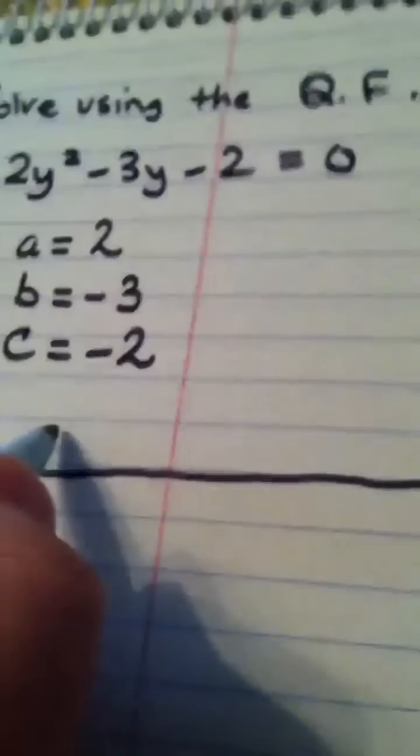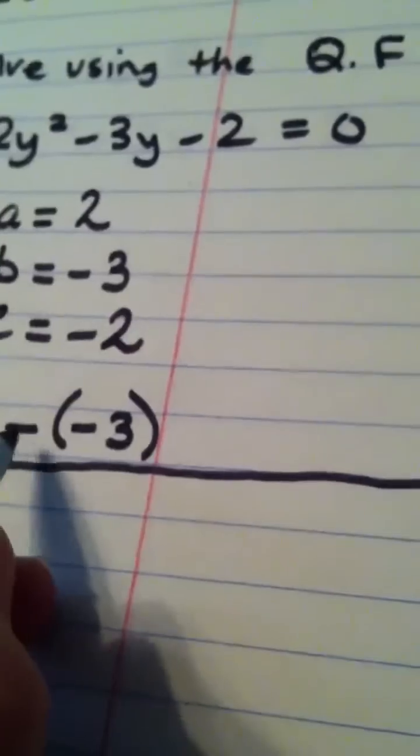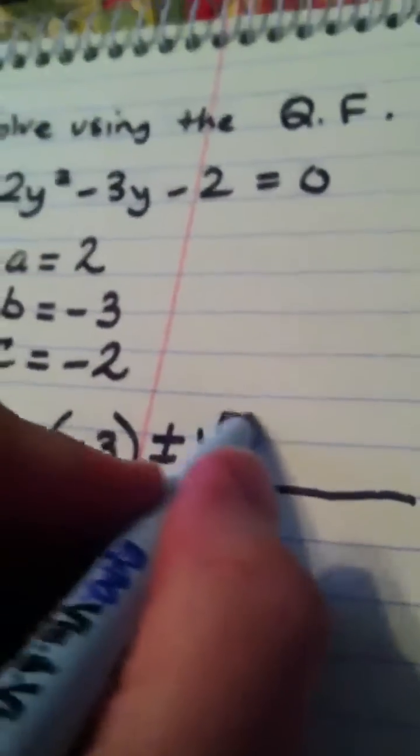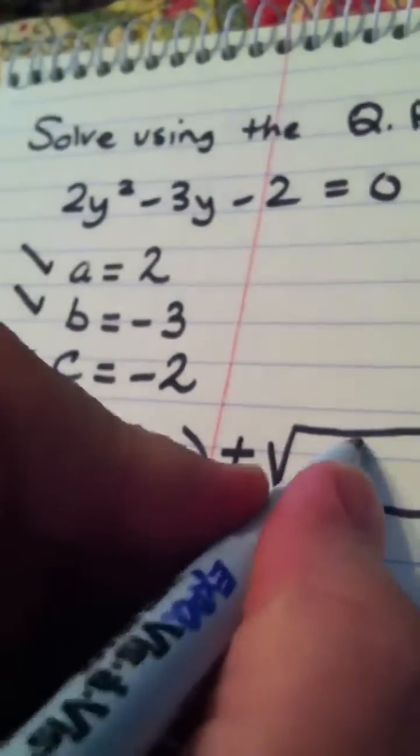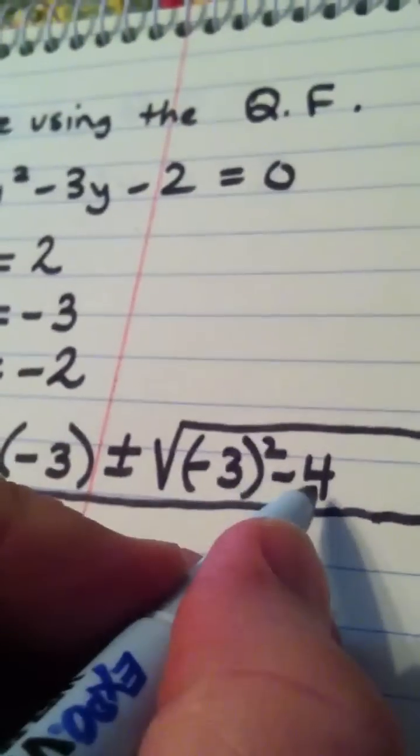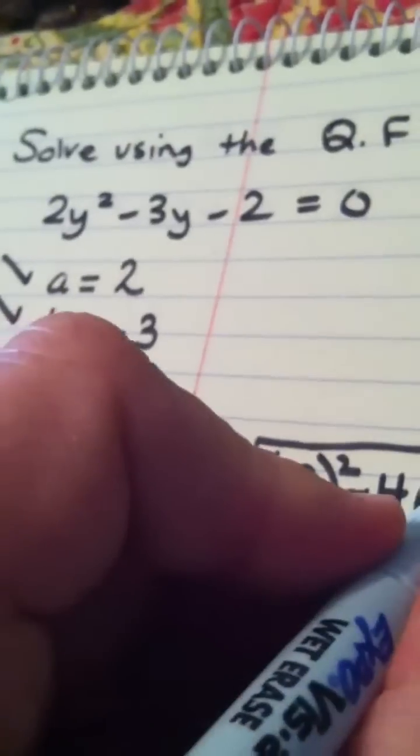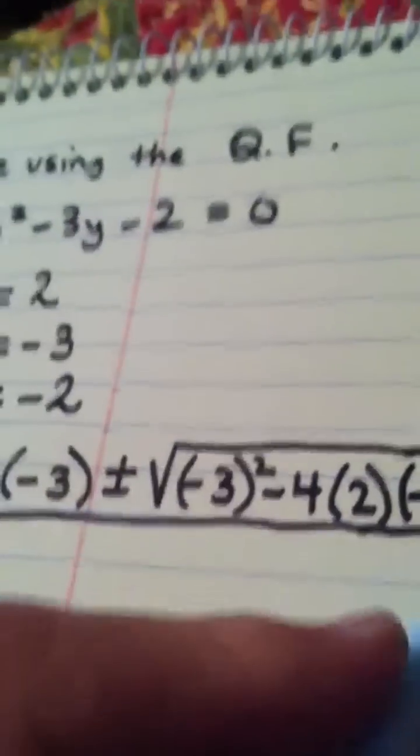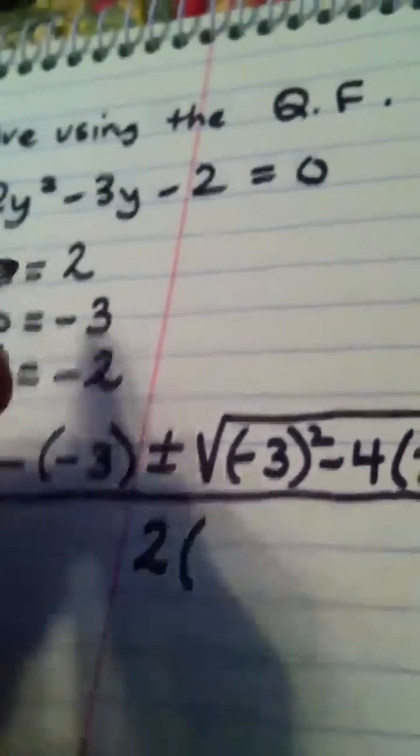And in the numerator we have the opposite of B, so that would be the opposite of negative 3, plus or minus the square root of B squared negative 3 quantity squared minus 4, that's always part of the formula. Then I put in A, which is 2, and then I put in C, which is negative 2. And this is all divided by 2 times, and I put in A.